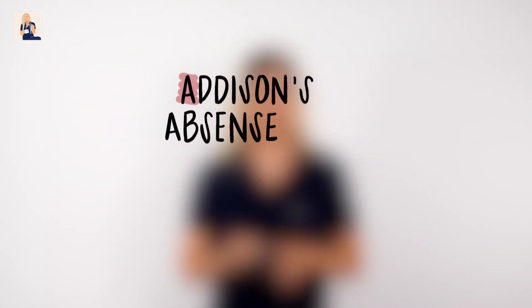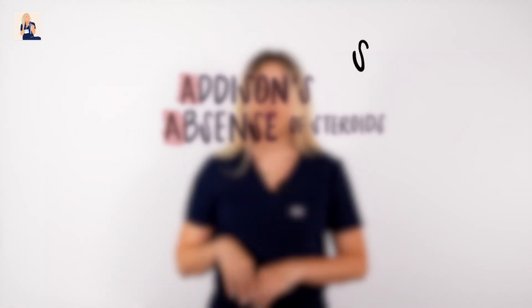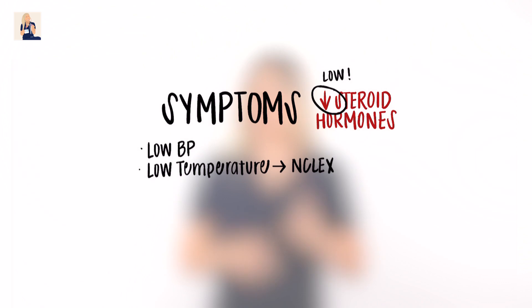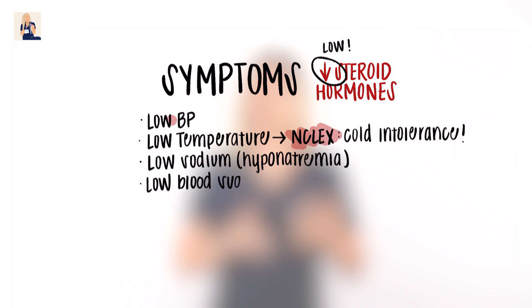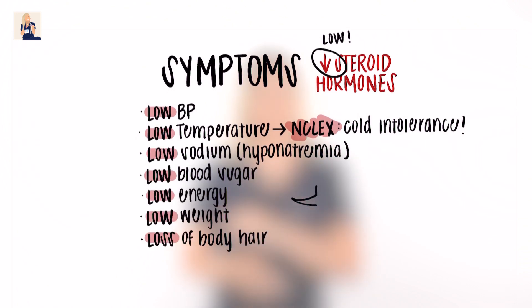When the adrenal gland is not executing these normal functions, we experience Addison's disease — an absence of steroids or normal function. We can list the signs and symptoms just by knowing basic adrenal gland function. With low steroid hormones, we see low blood pressure, low temperature (cold intolerance — NCLEX tip), low sodium or hyponatremia, low blood sugar, low energy, low weight, and loss of body hair.